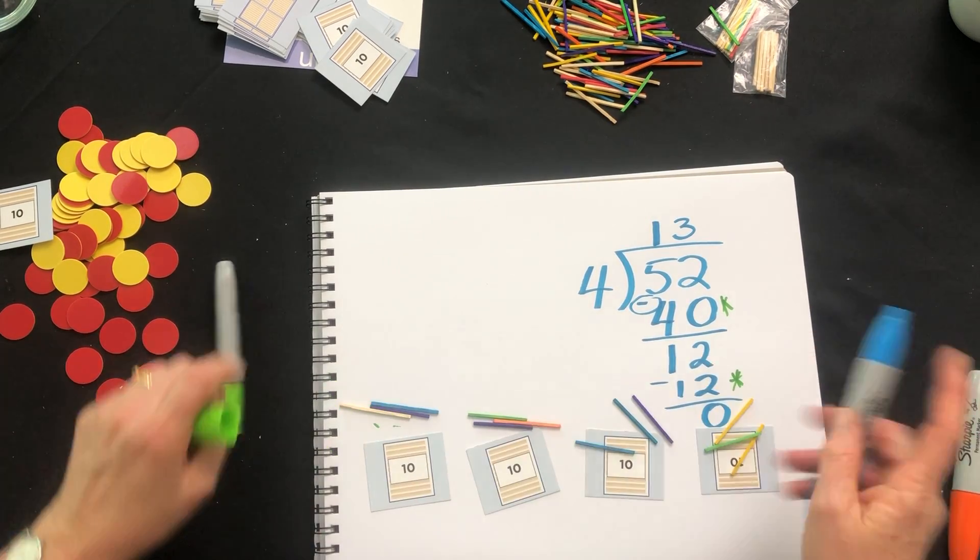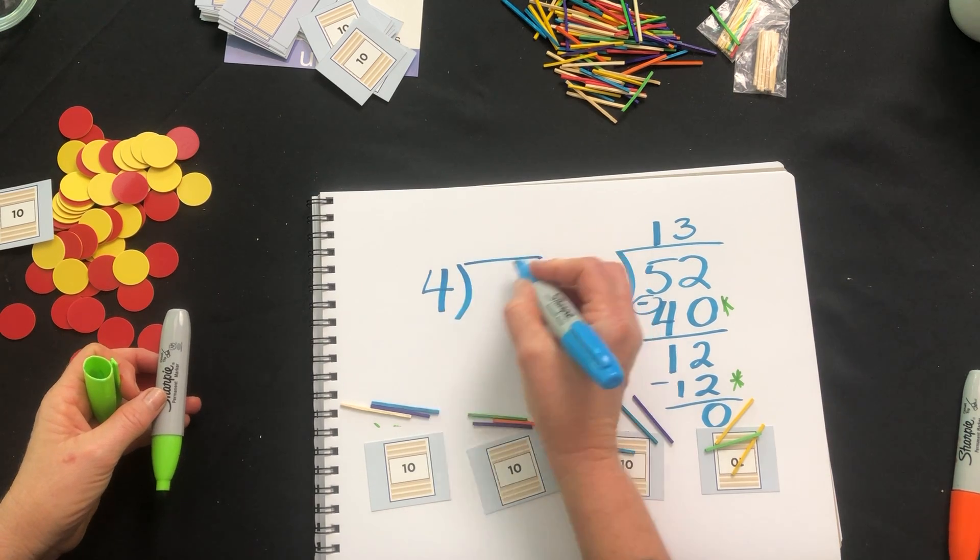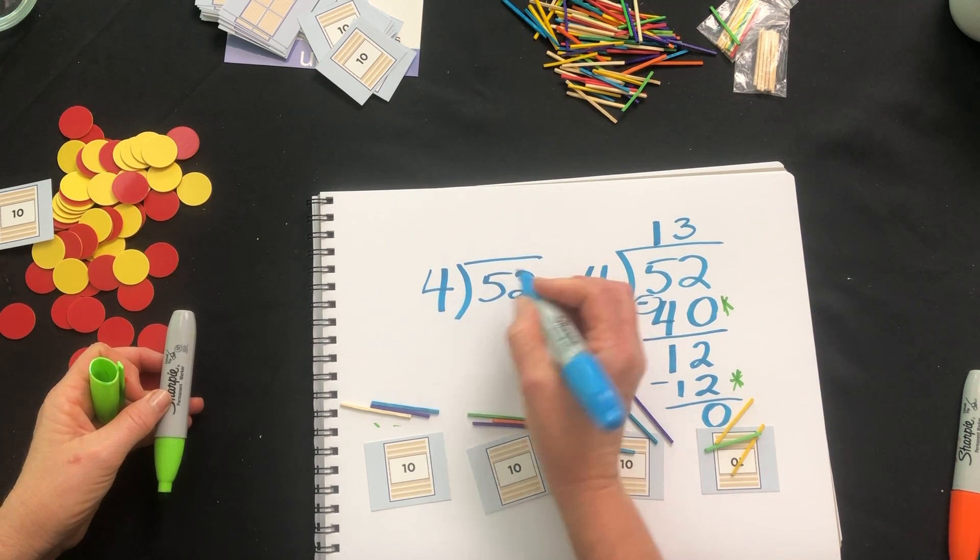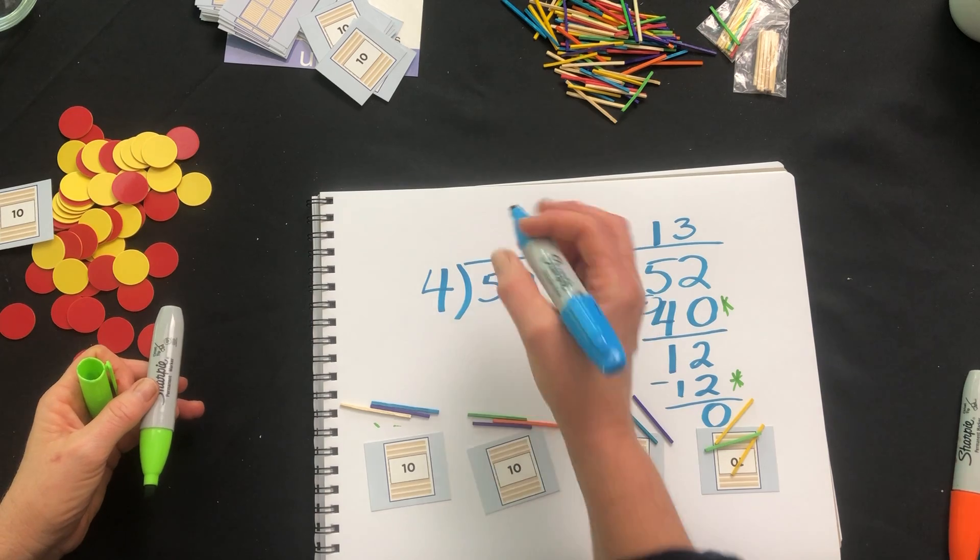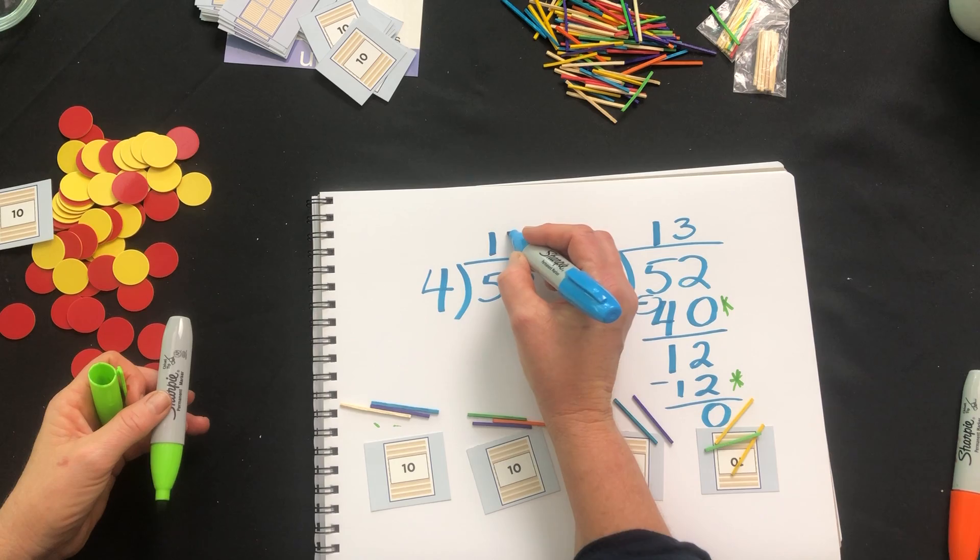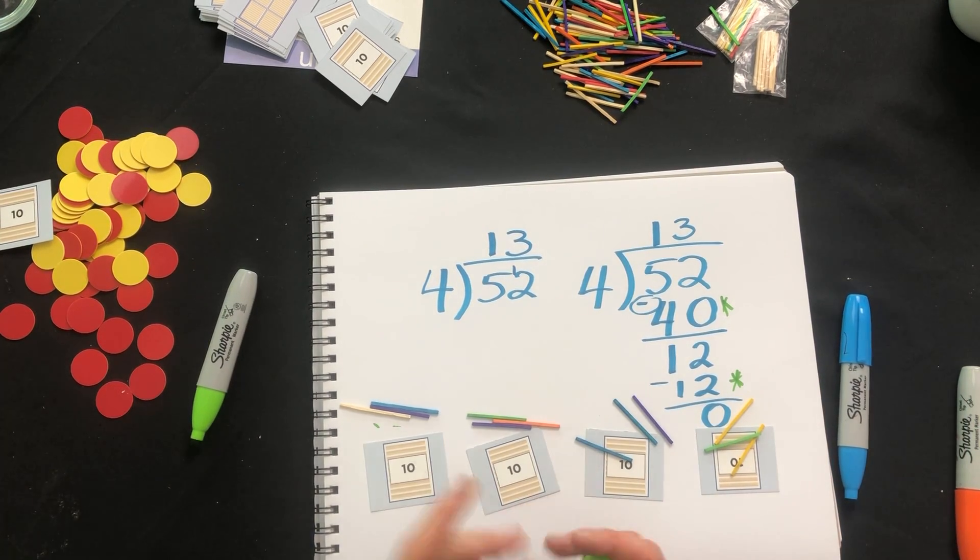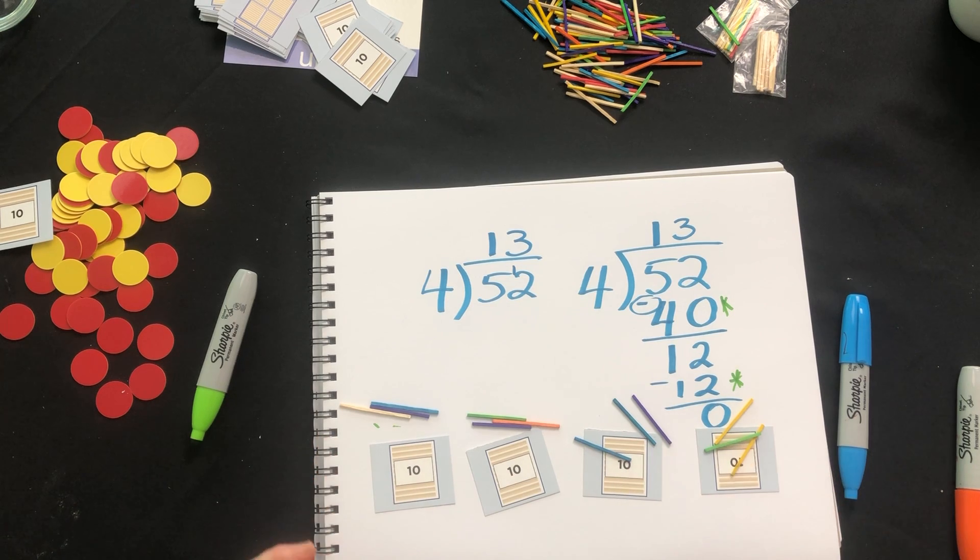Because in our shorter way of doing it where we went 4 into our 50 was 1 with 1 ten left over and 4 into 12 was 3. You can see we weren't subtracting each time even though that effectively was what we were doing with the model.